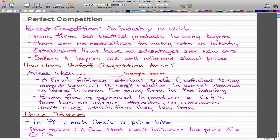How does perfect competition arise? Perfect competition arises when a firm's minimum efficient scale is small relative to market demand, so there is room for many firms in the industry. Each firm produces a good or service that has no unique characteristics, so customers don't care which firm they buy from.